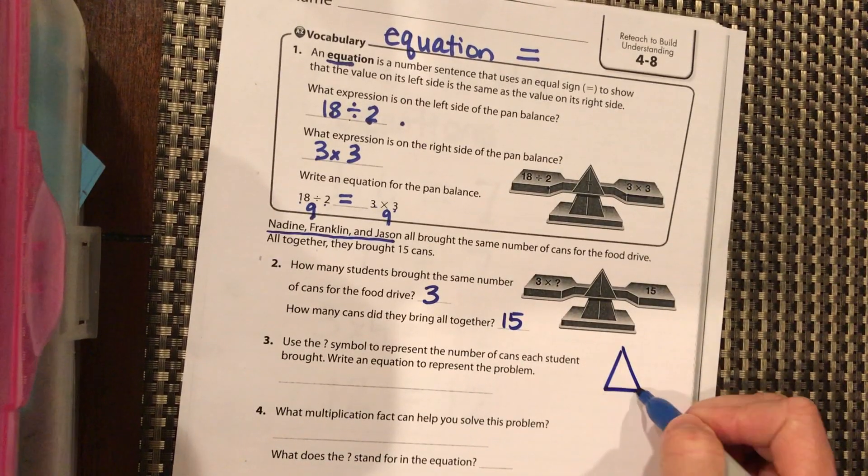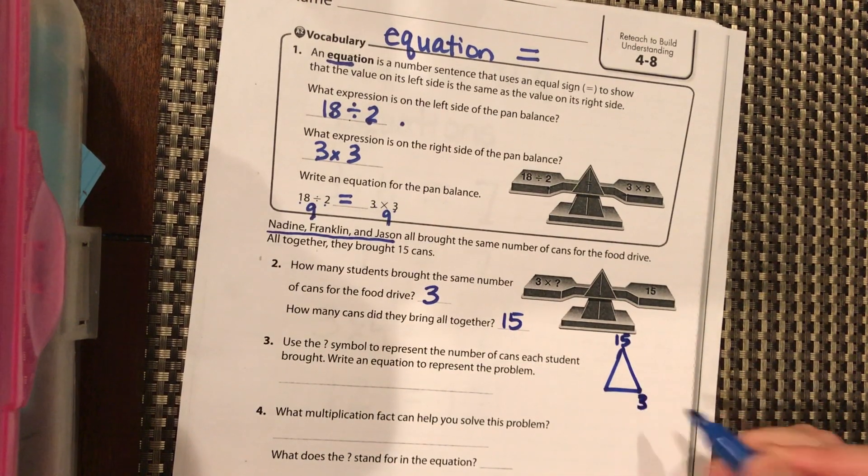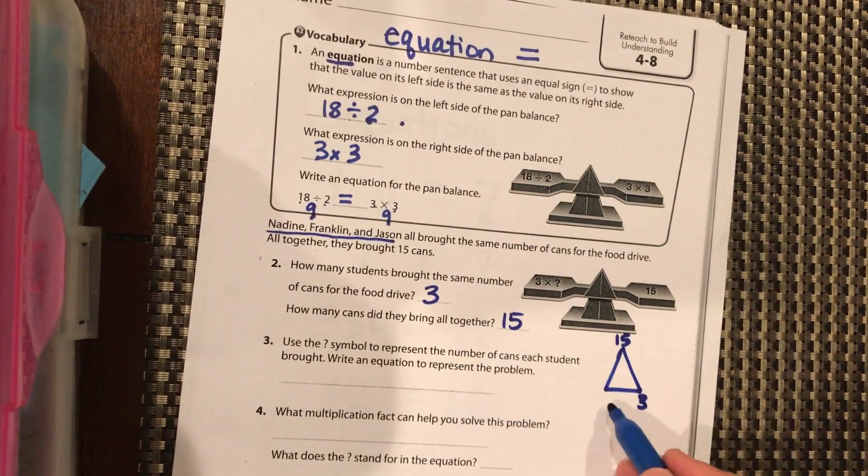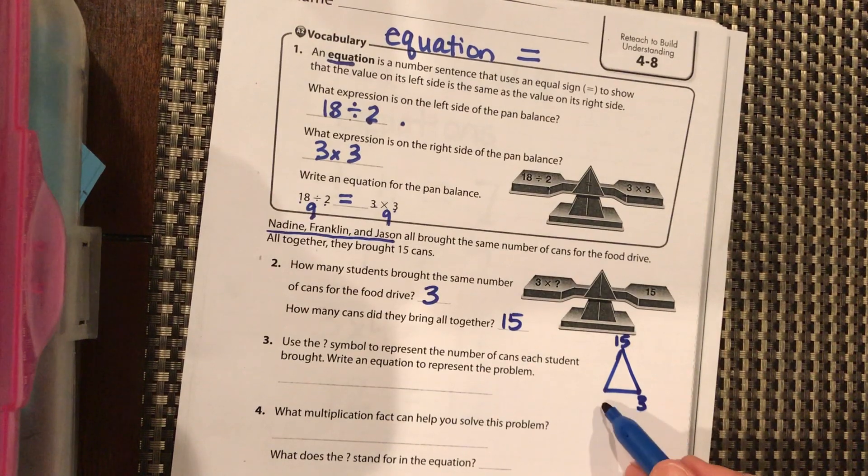Okay, so if we use our cool fact family, we know the total is 15. Three of them brought the same number. We want to know how many did they each bring to get 15. They have three equal groups, three equal students if you will.